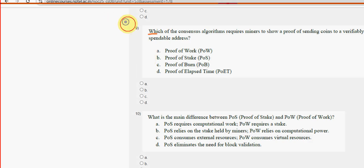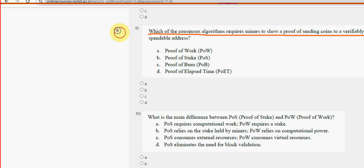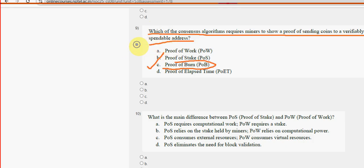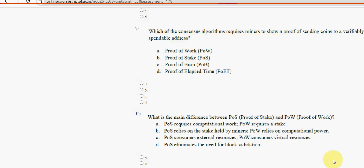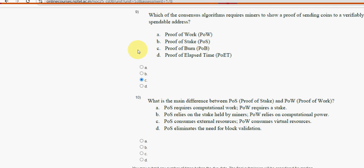Ninth question: which consensus algorithm requires miners to show proof of sending coins to a verifiably unspendable address? The most probable solution is option C — Proof of Burn. Mark option C as the probable solution for the ninth question.